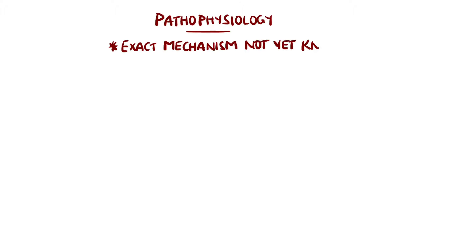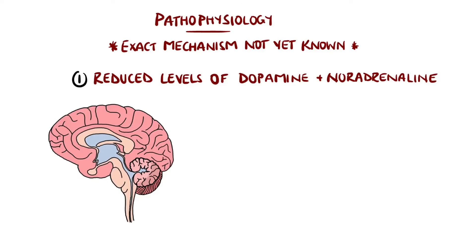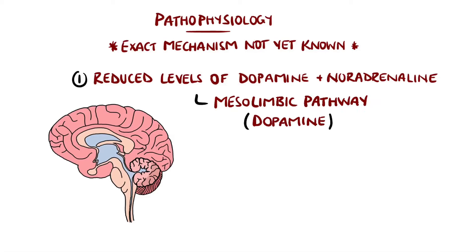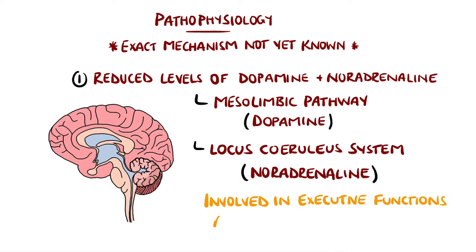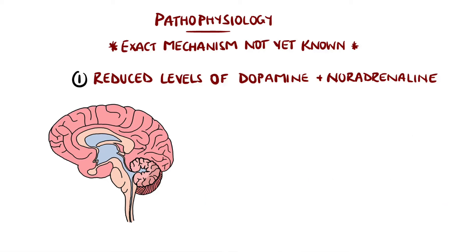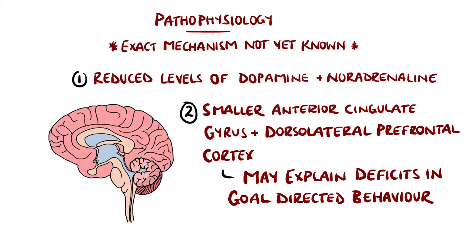The mechanism behind ADHD is not fully understood, although it is thought to be the result of changes in production or the use of dopamine and noradrenaline, which act as neurotransmitters in the nervous system. Specifically, the mesolimbic dopamine pathway and locus coeruleus noradrenergic system are involved in executive functions and stress responses, and these are thought to be fundamental in the pathogenesis of ADHD. Research has also found that the anterior cingulate gyrus and dorsolateral prefrontal cortex are smaller in ADHD patients, which could explain the deficits in goal-directed behaviour.